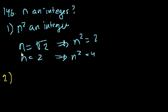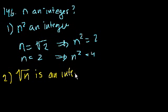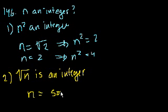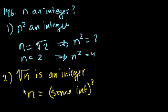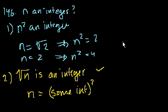Statement 2 tells us the square root of n is an integer. That essentially tells us that n is equal to some integer squared — if you take any integer and square it, you get an integer. So statement 2 alone is sufficient to answer this question. That was a strangely easy question — a nice little rest question.